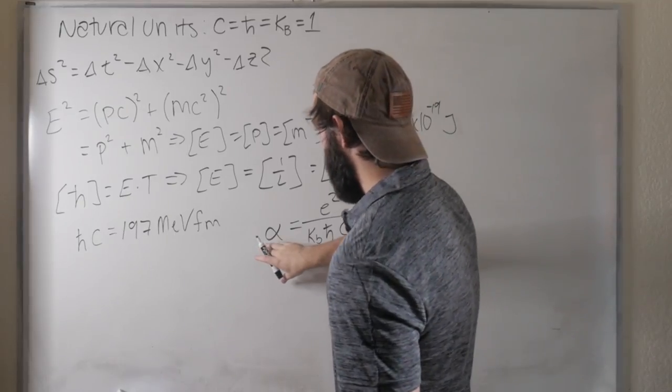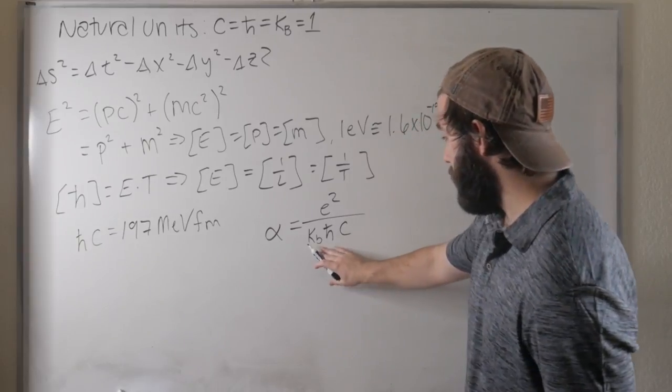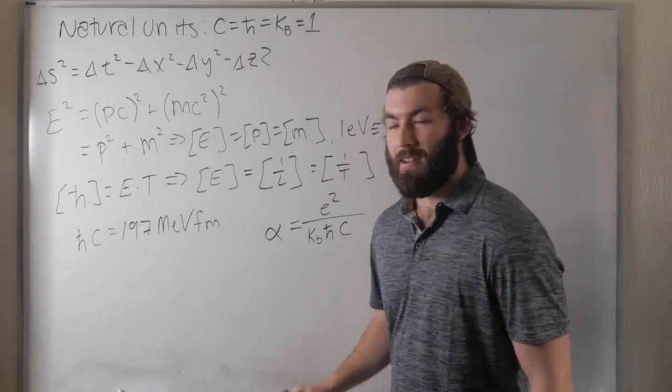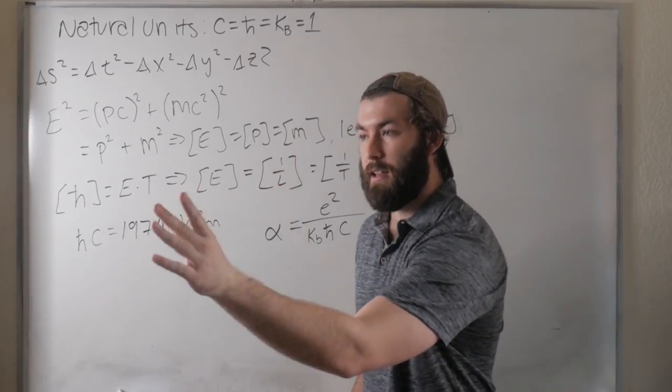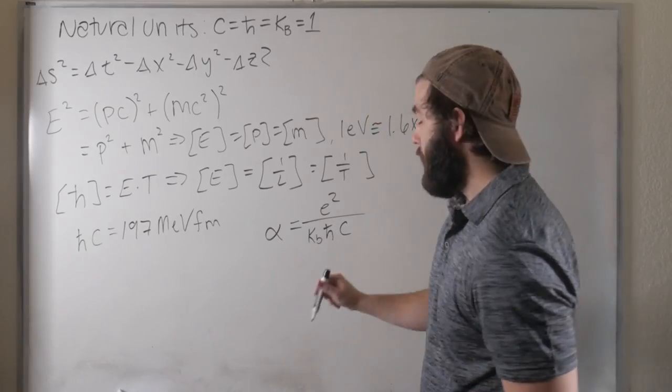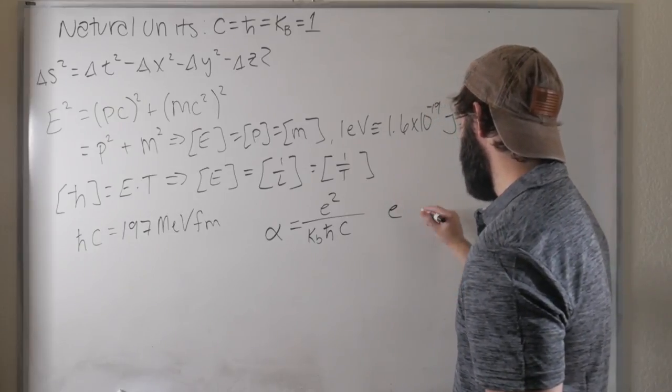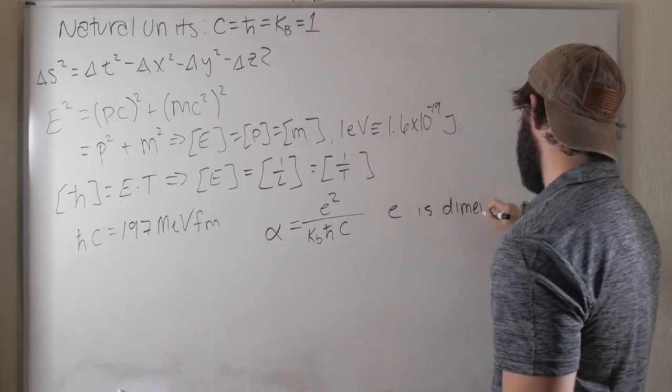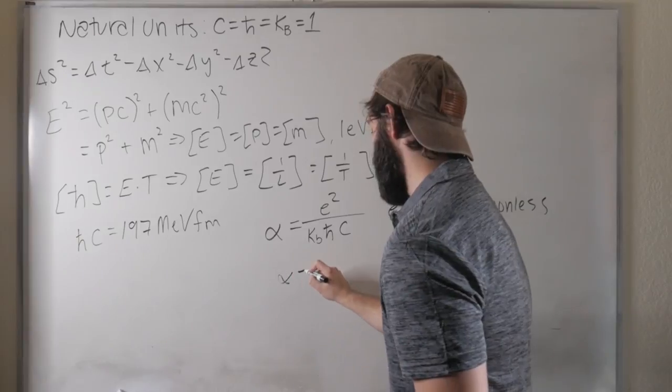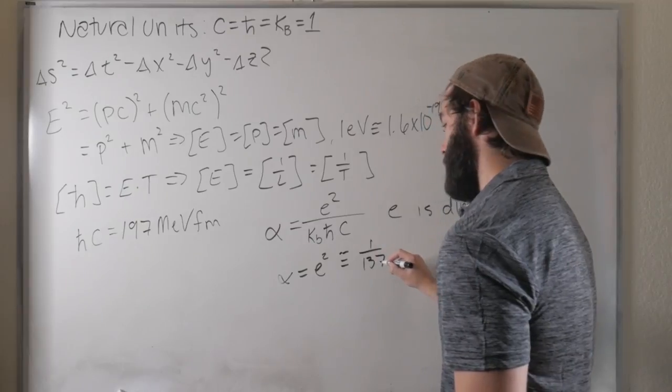Now, what's really cool about this is, the fine structure constant is a dimensionless quantity. And now, we've chosen units such that Boltzmann's constant, h-bar, and c are also dimensionless. Now, there's no way of taking something with units and dividing it by something that's dimensionless and ending up with something that's dimensionless. So what that tells us is that e, the charge of the electron, is dimensionless in natural units. So alpha is just equal to e squared, which is approximately equal to 1 over 137.